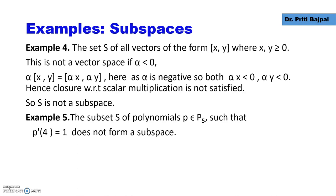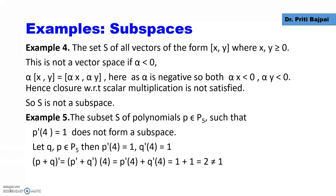What if we take a subset S of polynomials of degree less than or equal to 5 such that the derivative equals 1 when 4 is substituted? This will also not form a subspace. If P and Q are two polynomials from the subset, then P'(4) = 1 and Q'(4) = 1. Adding them: (P+Q)'(4) = P'(4) + Q'(4) = 1 + 1 = 2, which is not equal to 1. Hence S is not a subspace.